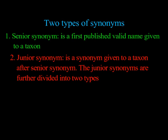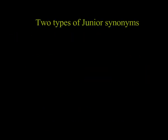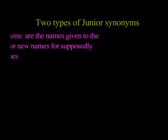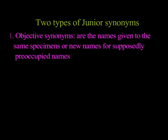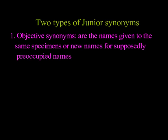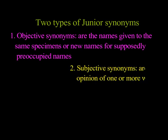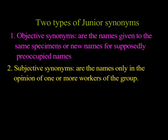Junior synonyms are further divided into two types. Objective synonyms are names given to the same specimen, or new names for supposedly preoccupied names, while subjective synonyms are names only in the opinion of one or more workers of the group.